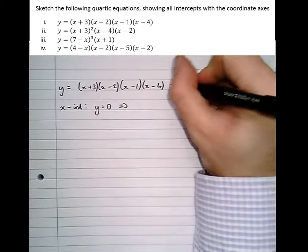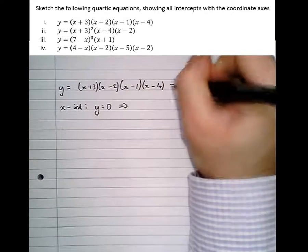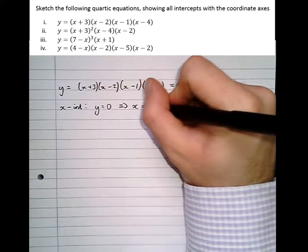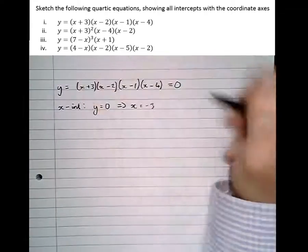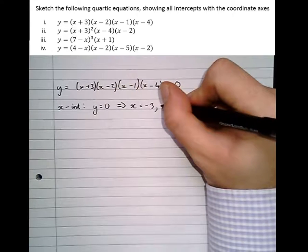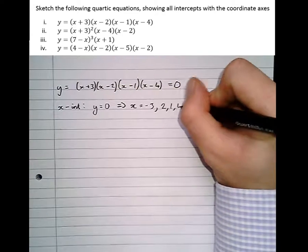So when y equals 0, that equals 0, x can equal minus 3 (that turns that bracket to 0), 2, 1, or 4.